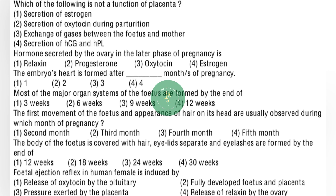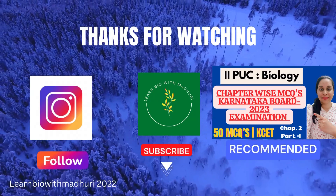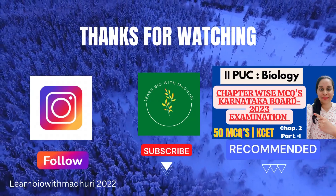Next question: the first movement of the fetus and appearance of hair on its head are usually observed during which month of pregnancy? — option number 4: 5th month. Next question: the body of the fetus is covered with hair, eyelids separate, and eyelashes are formed by the end of — option number 3: 24 weeks. And coming to the last question of this session: fetal ejection reflex in human female is induced by — option number 2: fully developed fetus and placenta. Thank you for watching my video. Stay tuned for more such videos.